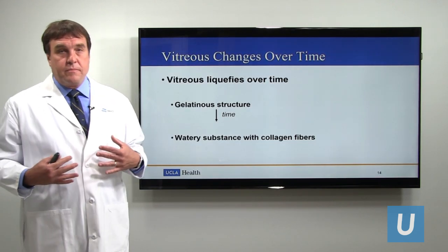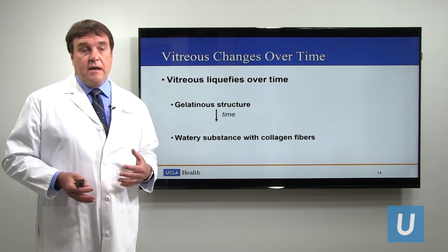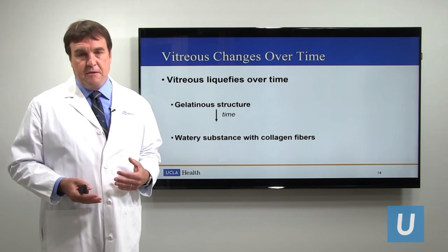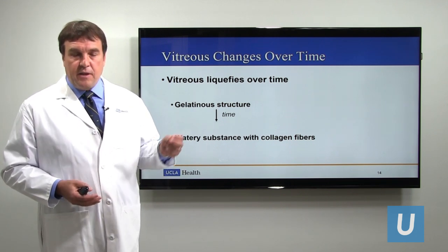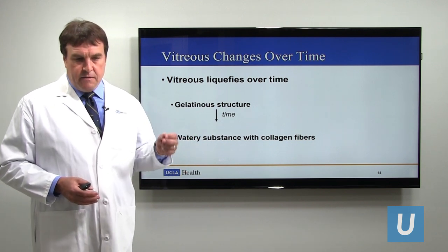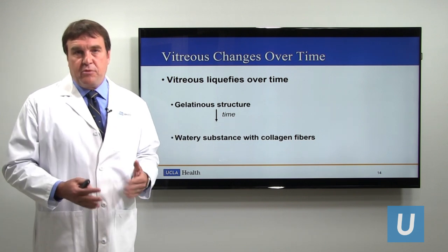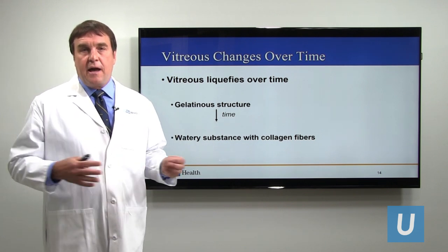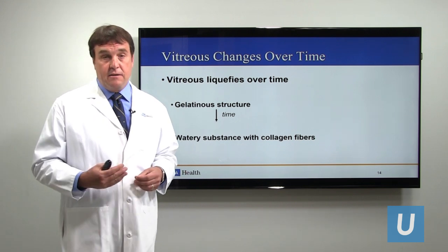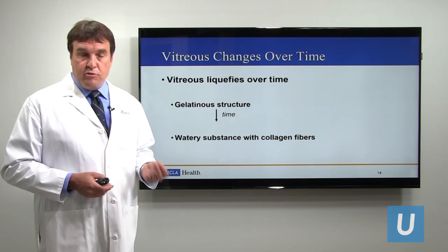Over time the vitreous liquefies. When we are born, the vitreous gel in the eye has a consistency like a thick fluid — almost a jello-like consistency. As time passes, molecules like chondroitin sulfate and proteoglycans dissolve out of the vitreous, leaving the collagen fibers by themselves. These can then start tangling and clumping up, causing opacities that block the light, which are eventually perceived as vitreous floaters.